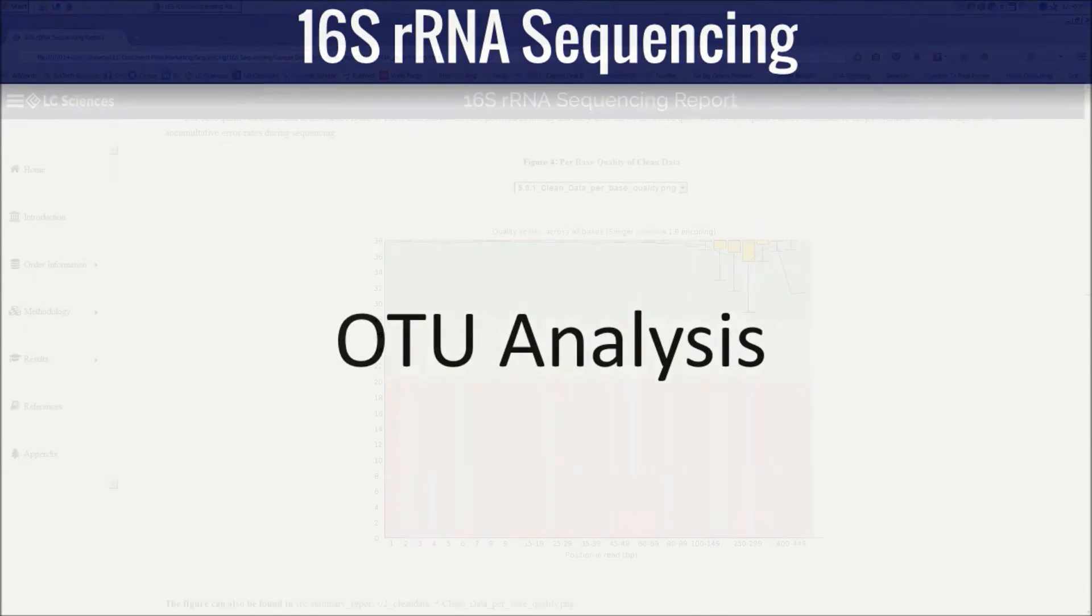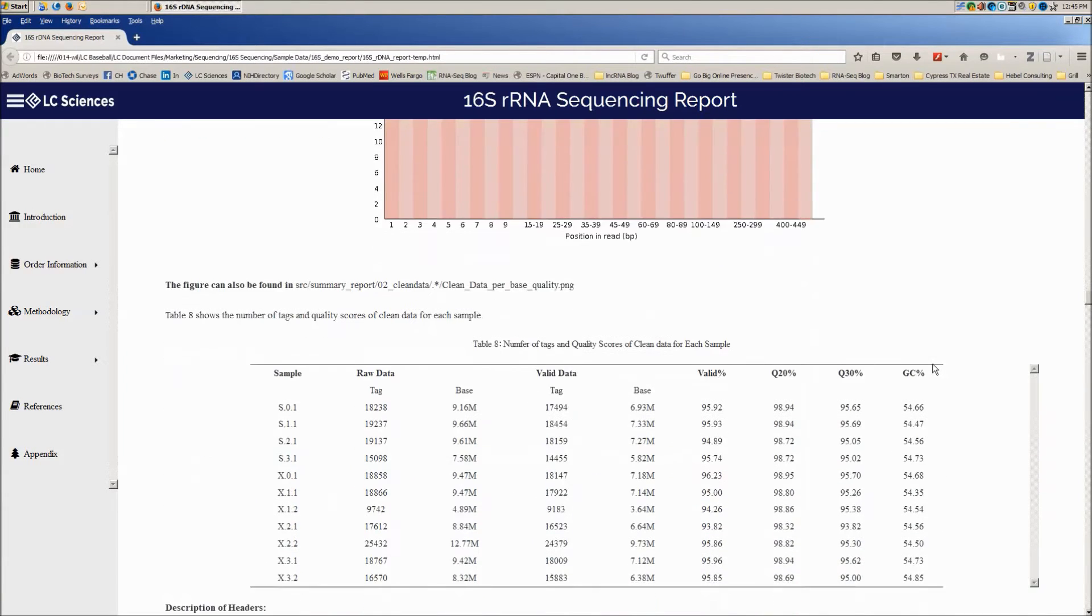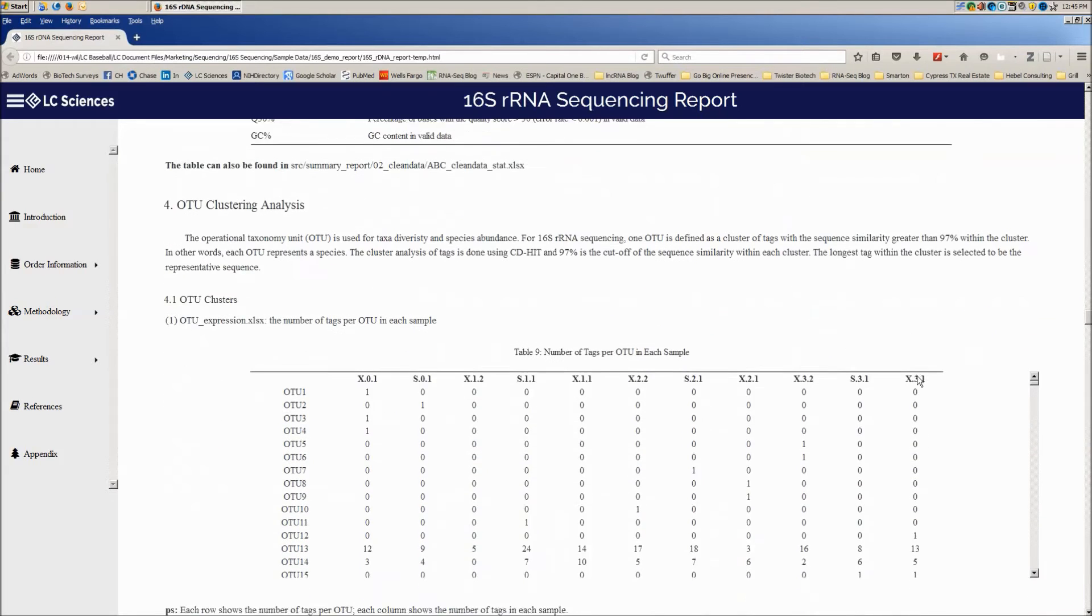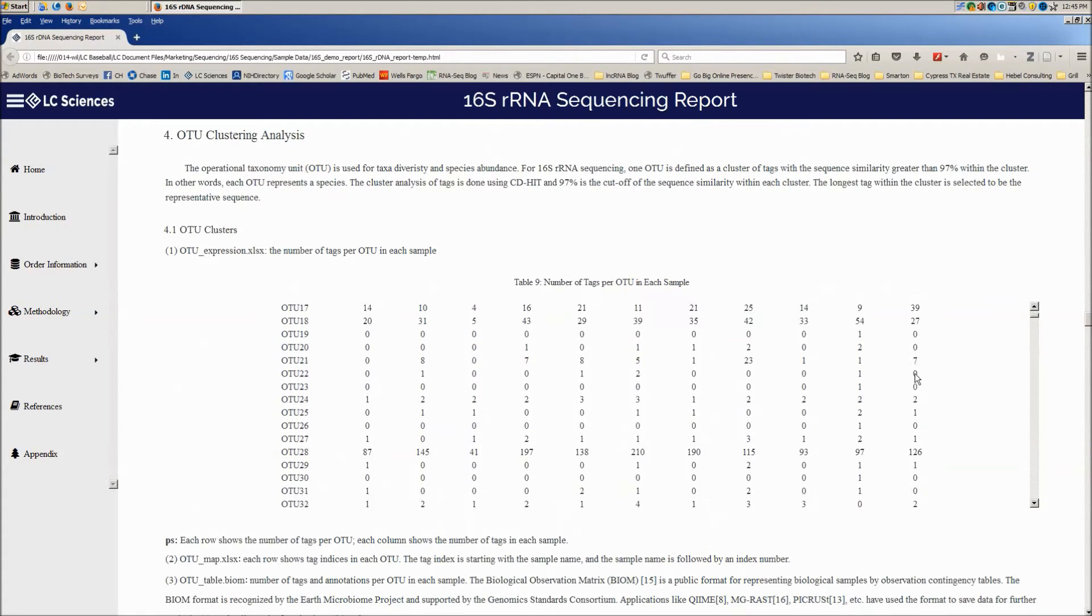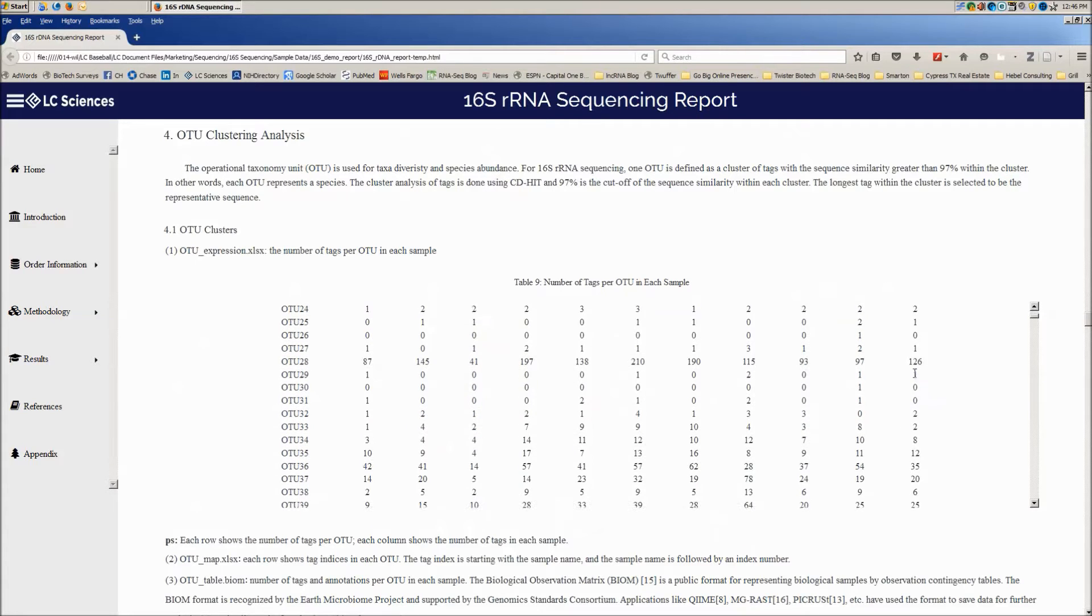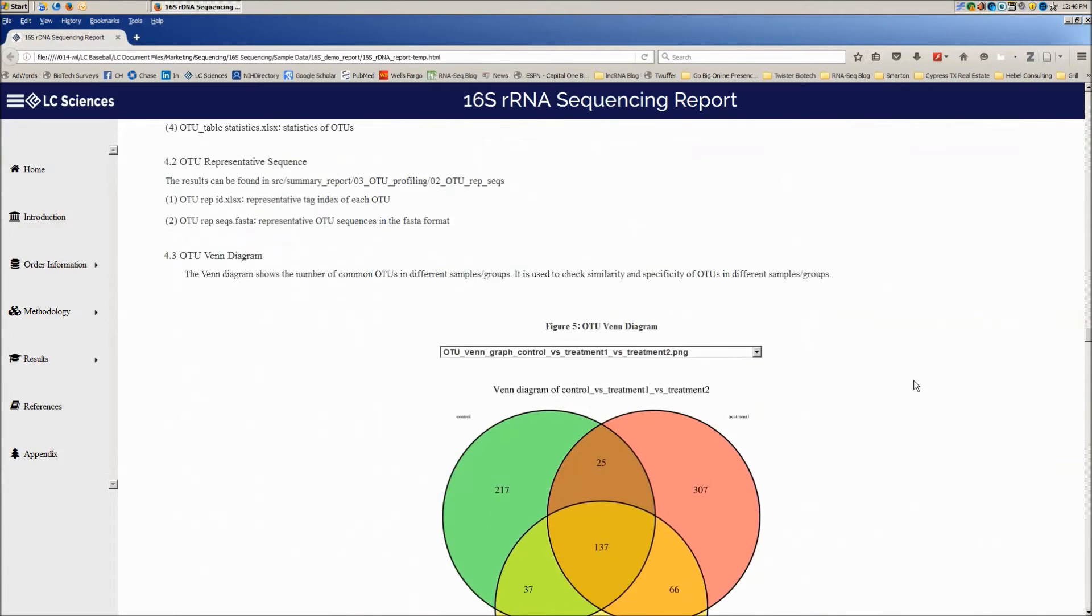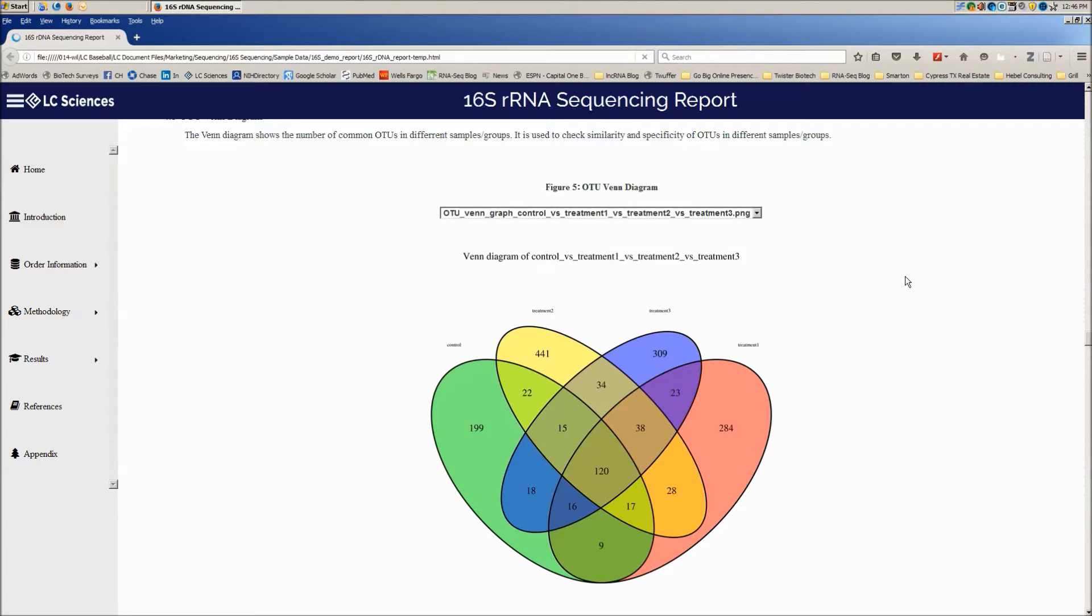An operational taxonomic unit, or OTU, is a measure of microbial diversity commonly used when performing 16S sequencing analysis. Sequence data is clustered into OTUs based on sequence similarity, and each OTU generally represents a distinct species. OTU Venn diagrams can be used to show the unique OTUs in different subsets of sample groups.